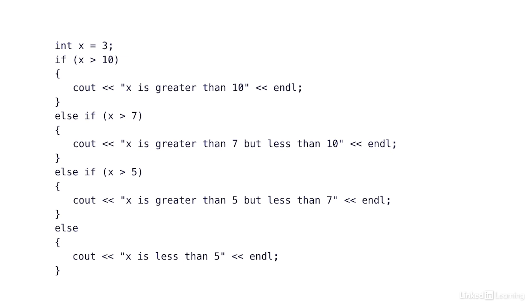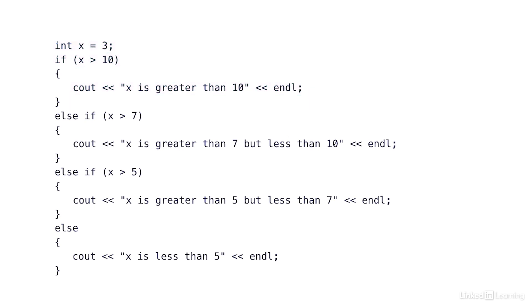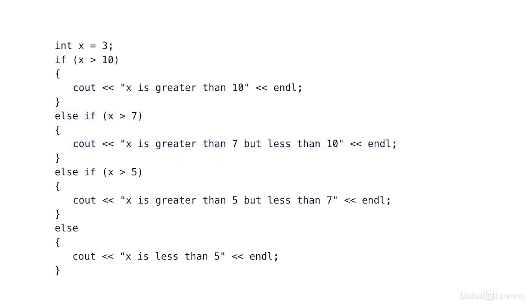In code, if we said int x is equal to 3 — if x is greater than 10, print x is greater than 10. Otherwise, I can say if x is greater than 7, I'm going to print x is greater than 7 but less than 10. The only way to get to the second condition is by failing the first, so the first condition has to be false for the second to even be checked.